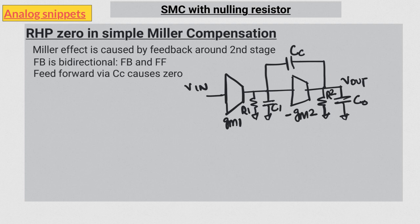Another way to understand it is that there are two paths from the input of second stage to the output of second stage. One path is through gm2, which is frequency independent, and the other path is through this Miller capacitor, which is frequency dependent.